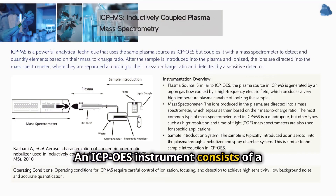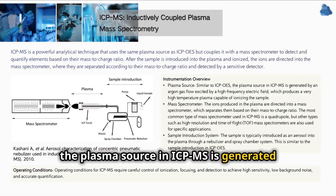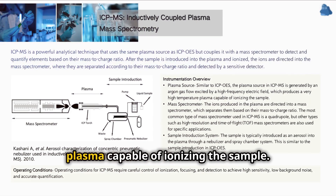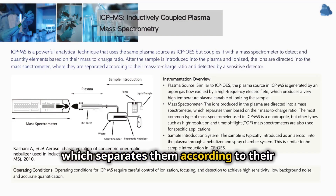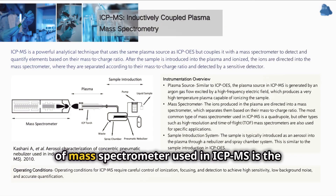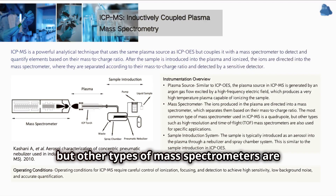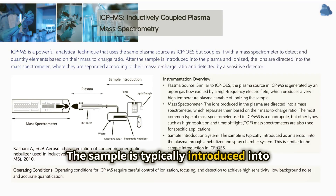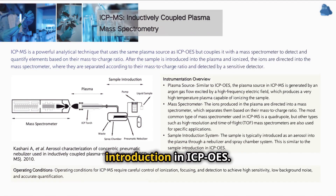An ICP-MS instrument consists of a plasma source, a mass spectrometer, and a sample introduction system. Similar to ICP-OES, the plasma source in ICP-MS is generated by a stream of argon gas excited by a high-frequency electric field, which produces an ultra-high temperature plasma capable of ionizing the sample. The ions produced in the plasma are guided into the mass spectrometer, which separates them according to their mass-to-charge ratio. The most common type of mass spectrometer used in ICP-MS is the quadrupole mass spectrometer, but other types are also used for specific applications, such as high-resolution and time-of-flight mass spectrometers. The sample is typically introduced into the plasma as an aerosol through a system of nebulizers and spray chambers, similar to the sample introduction in ICP-OES.